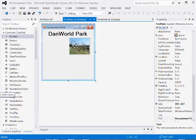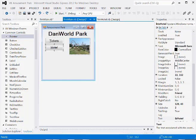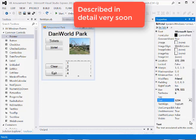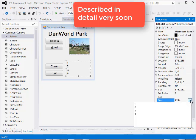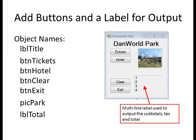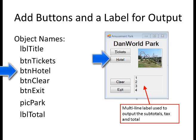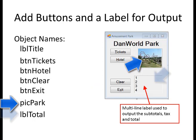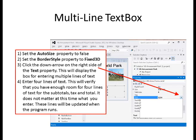Add buttons and a label for output. I'm using a multi-line label with four lines that will be used to output the subtotals, tax, and total. If you wish, you can use a list box instead. Here are the object names I'm using: LBL title for the title, BTN tickets, BTN hotel, BTN clear, BTN exit, PIC PARK, and LBL total. PIC PARK is for the picture box.